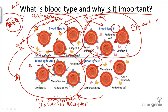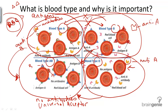Blood type O, last but not least, is special because it actually has no antigens on its surface. So what kind of antibodies does it produce? It actually produces anti-B and anti-A antibodies, and obviously those would attack any red blood cells that had A or B antigens. So it is going to defend itself against all these other types.